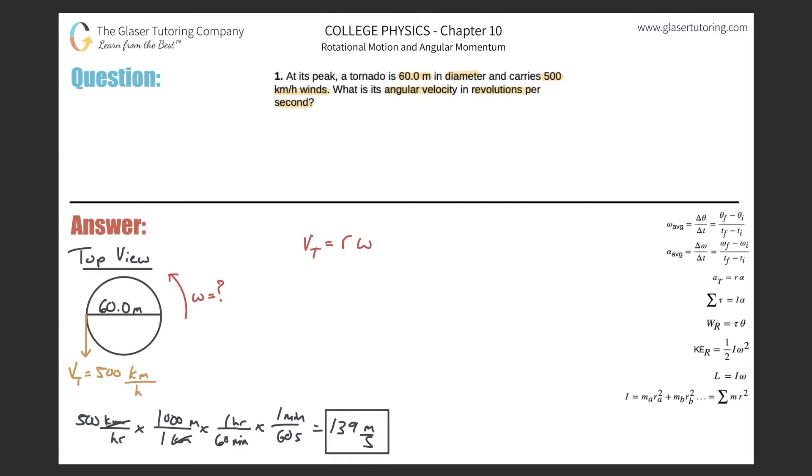So now all we have to do is basically plug in the values. Actually, why don't we just solve this algebraically first for the angular velocity? So the angular velocity is going to be equal to the tangential velocity over the radius. Plugging in now the values, we have a value of approximately 139 all divided by the radius which was 30 meters.